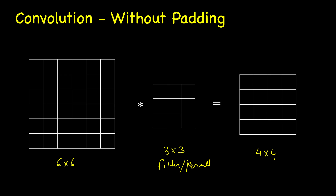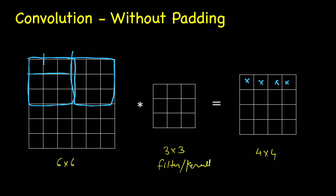Why was it 4x4? The first time we overlap this kernel over this window, we take element-wise multiplication and add everything to get a pixel. We can shift it once, twice, three times, and four times, so there are four arrangements possible - that's why we have four rows. Similarly, being a square, by the same analogy, vertically we also have four positions.